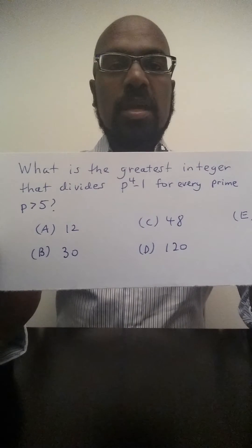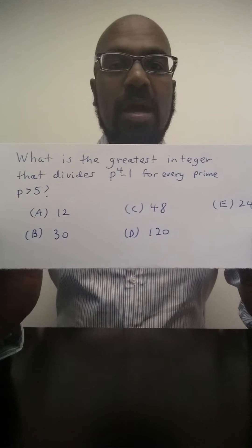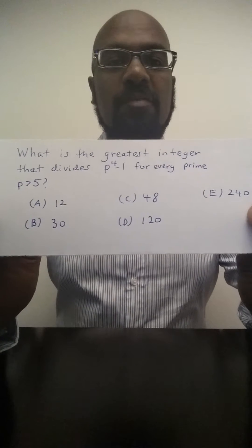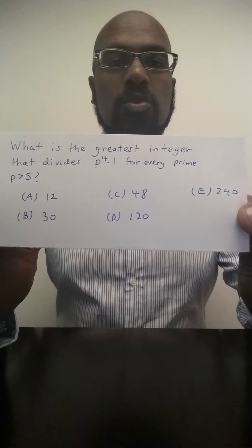What is the greatest integer that divides p to the fourth minus 1 for every prime p greater than 5? The choices are 12, 30, 48, 120, and 240.